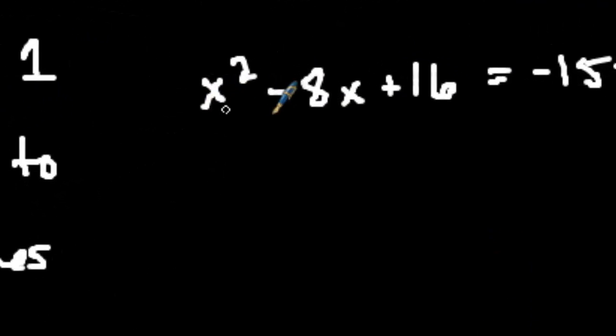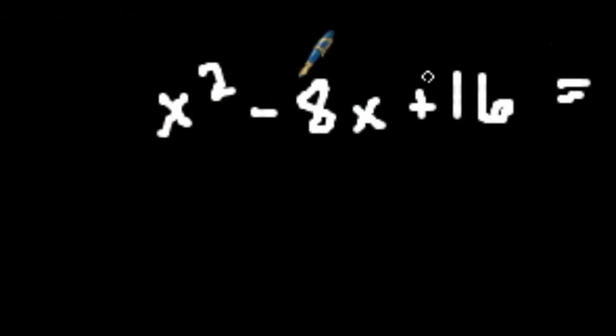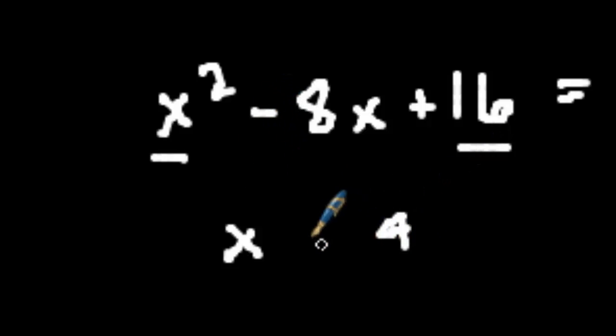Once I have that, what I've created over here is a perfect square, which is very easy to factor. You take the square root of this, which is x. You take the square root of this, which is 4, and you take this sign, whatever it is, minus, squared. That's factored.